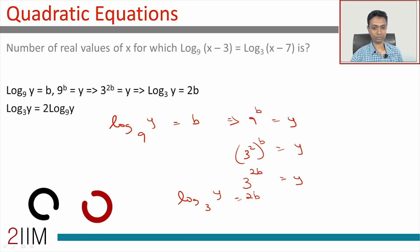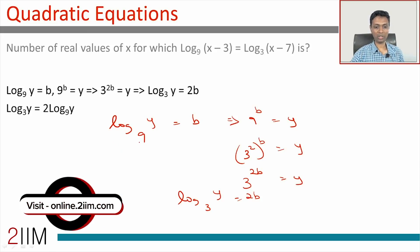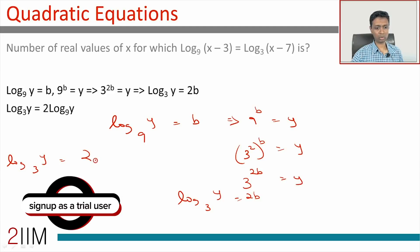So if log y to the base 9 is b, then log y to the base 3 is 2b. This simplifies to: log y to the base 3 equals 2 times log y to the base 9 for any y. This is important because whenever you have logarithms, it helps to have the same base.